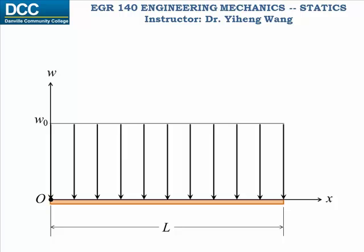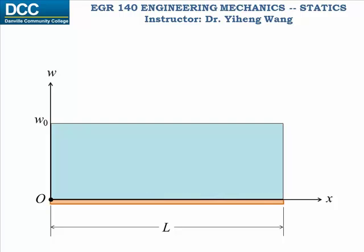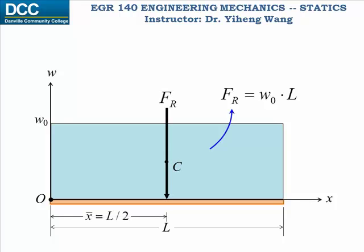Let's look at two special cases. First, when the load intensity has a uniform distribution across the length of the member. In other words, W is a constant value, W zero. The resultant force equals to the area under the line W zero times L, and it locates at the center of the rectangle with x bar being half of L.